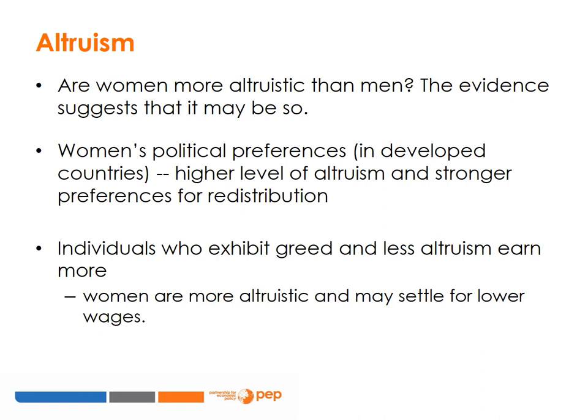Are women more altruistic than men? The evidence suggests that it may be so. Bertrand 2011 reviews field evidence that is consistent with a higher level of altruism and stronger preferences for redistribution among women, drawing from recent evidence in the context of political preferences of women in developed countries. Bertrand concludes that the evidence suggests there might be true psychological differences between men and women in the strength of their social preferences, which may lead women to settle for lower wages. The literature also suggests that individuals who exhibit more greed and less altruism earn more. This conclusion is important in helping us understand gender wage inequality and also leads us to question models of rational economic human beings who are self-interested rather than altruistic.